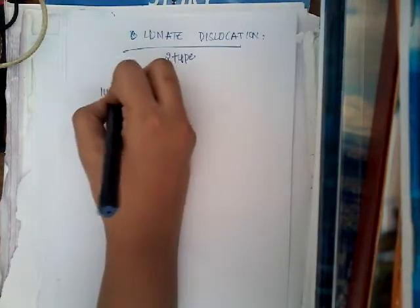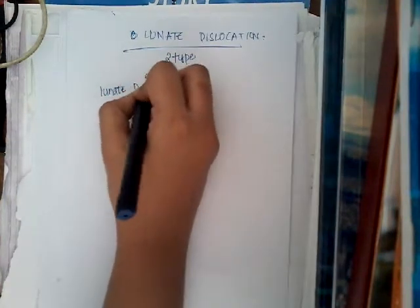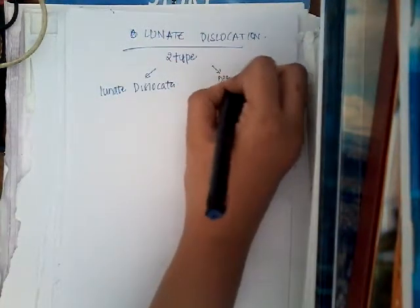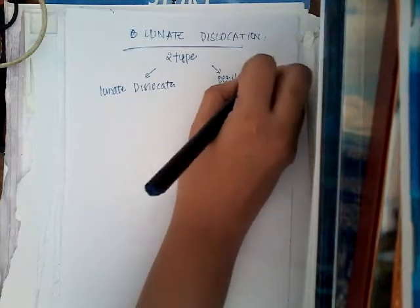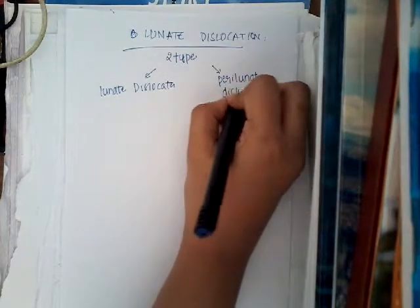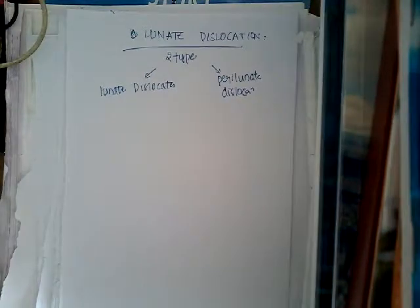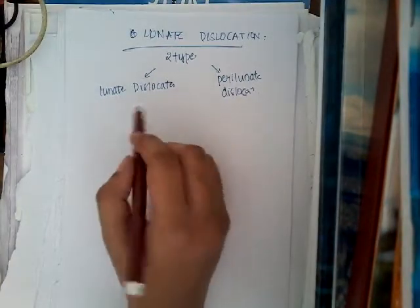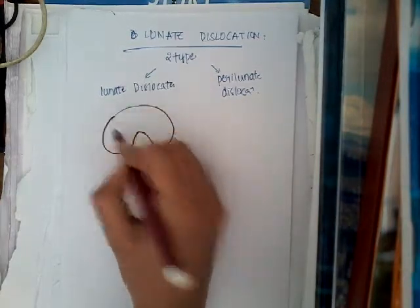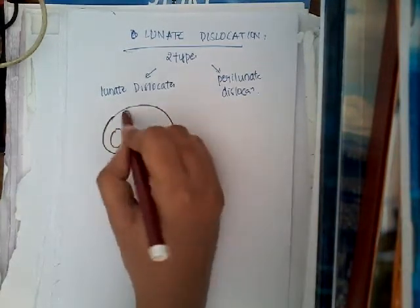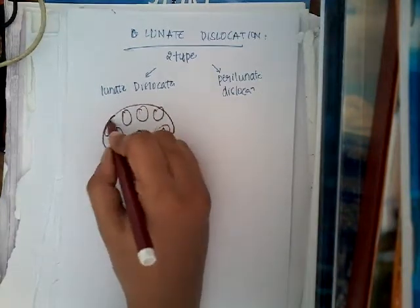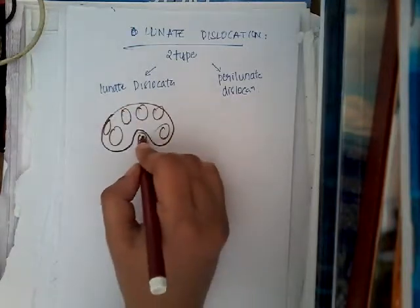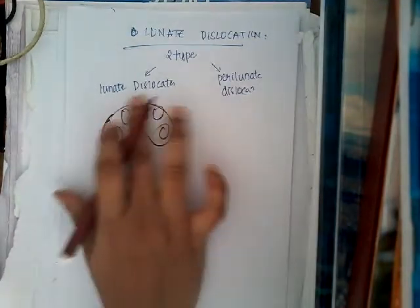One is called lunate dislocation, where the lunate dislocates anteriorly. The second is perilunate dislocation. I'll draw it in a different way — think of these as the other carpal bones and this is the lunate. In lunate dislocation, only this lunate bone dislocates, whereas the other carpal bones remain in position.